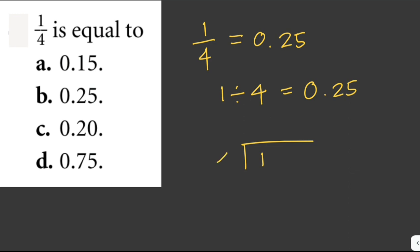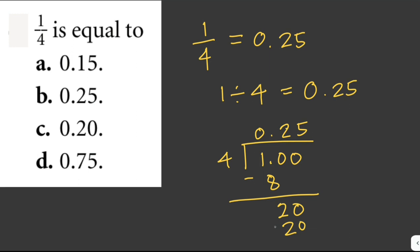You can use long division: 1 divided by 4. 10 divided by 4 is 2, two times four is 8, subtract — 10 minus 8 is 2, then 20 divided by 4 gives us 0.25. This method is useful in case you're given larger fractions where you don't know the exact decimal value. The answer here is letter B.